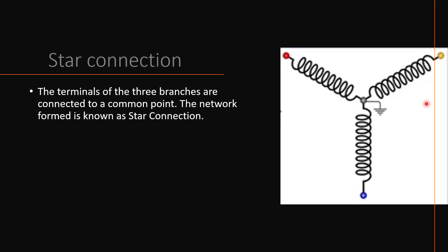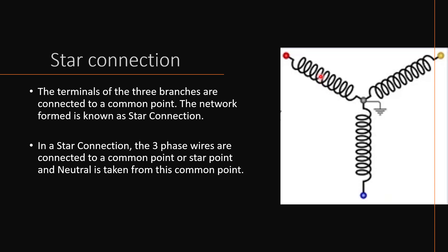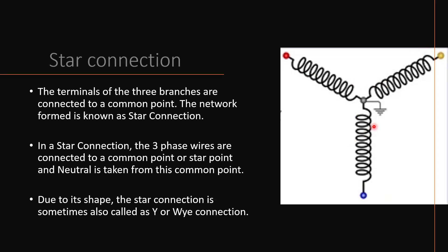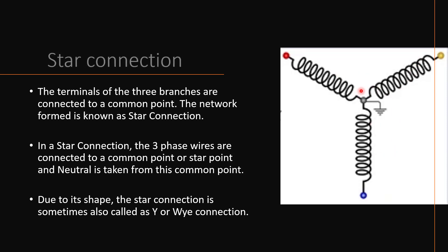In star connection, the terminals of the three branches are connected to a common point, forming a network. You can see three phases R, Y, B connected to a common point. This common point is known as neutral. So in star connection, there will be four terminals: three phases and neutral. This shape resembles a star or Y, so this is called either star connection or Y connection.